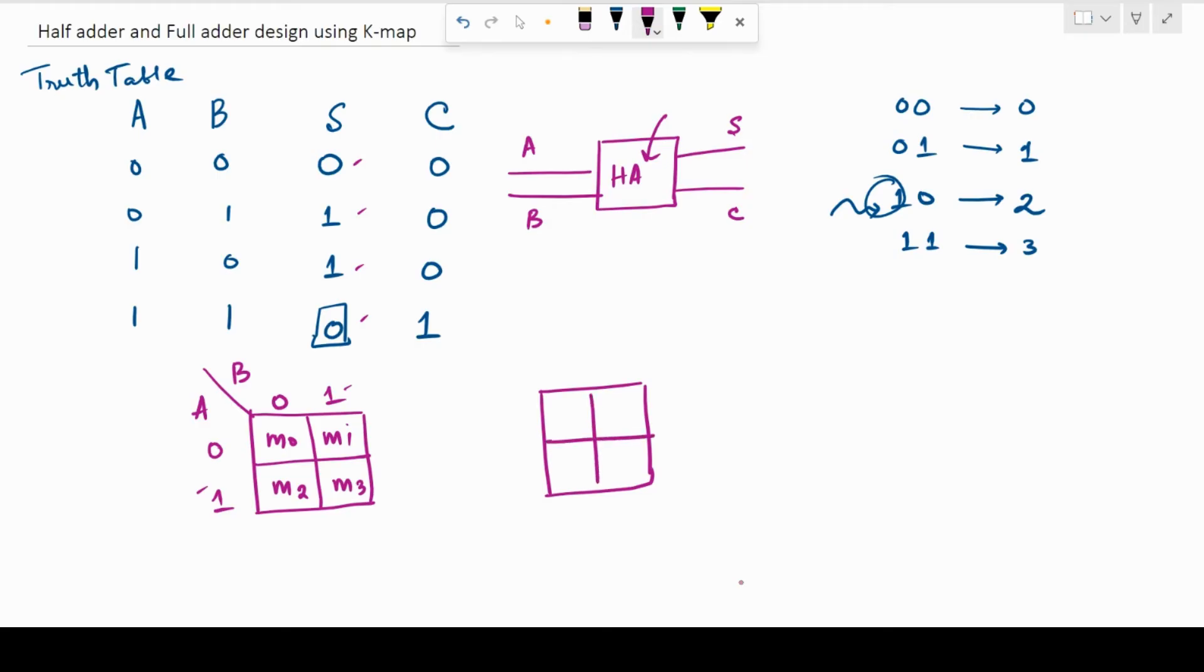Here, I have A and B and for the 0,0 that is minterm 0, minterm 1, minterm 2 and minterm 3. For minterm 0 in that box, I should fill in a 0.